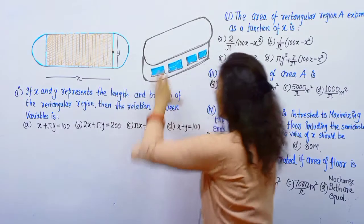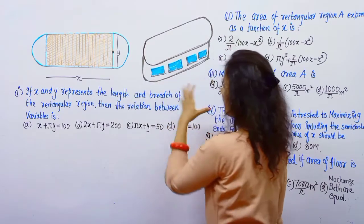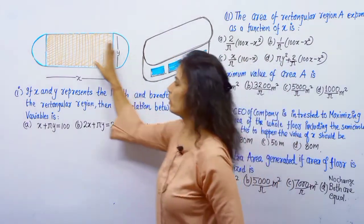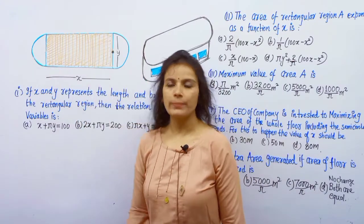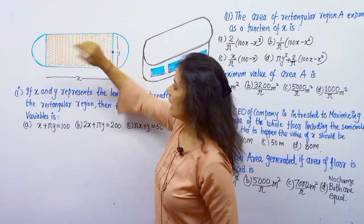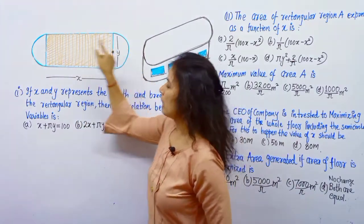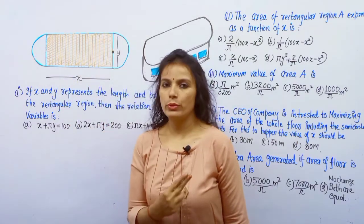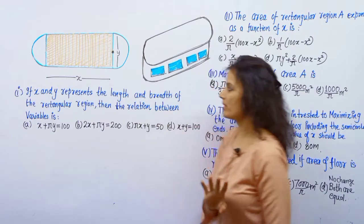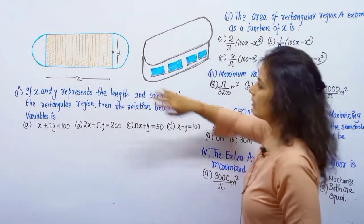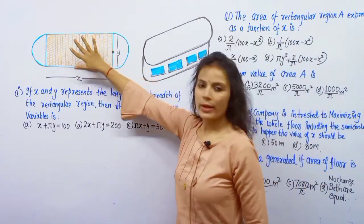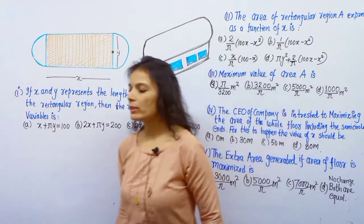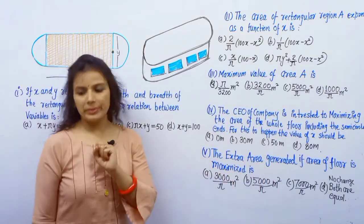This multinational company has made a building whose structure is something like this. The floor is a combined figure — here is a rectangle and at the ends are two semicircles, like you may have studied in 9th or 10th grade. This floor has a perimeter of 200 meters.